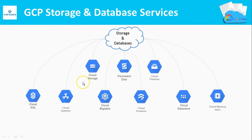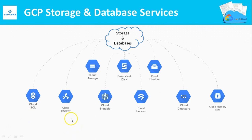Under Storage and Databases, you can see Google Cloud Storage, which is an object storage system. Persistent disks will give you block-level storage for your virtual machines. Cloud Filestore is a managed shared file storage system. For SQL-based databases like MySQL and PostgreSQL, you have Cloud SQL and Cloud Spanner. Cloud SQL supports vertical scaling whereas Cloud Spanner supports horizontal scaling. For NoSQL databases, we have Cloud Bigtable, Firestore, and Datastore. Cloud Memorystore is a fully managed in-memory datastore based on Redis.